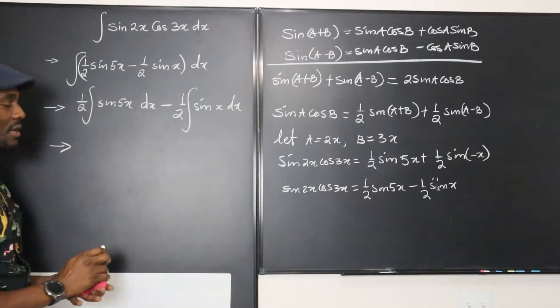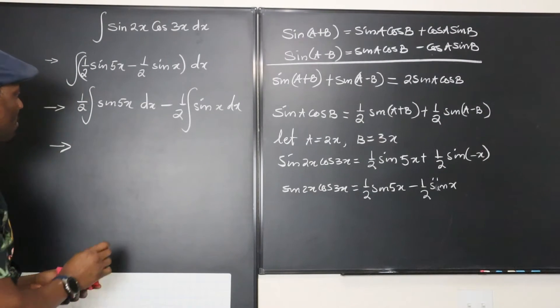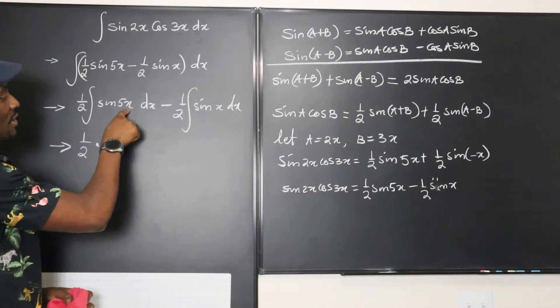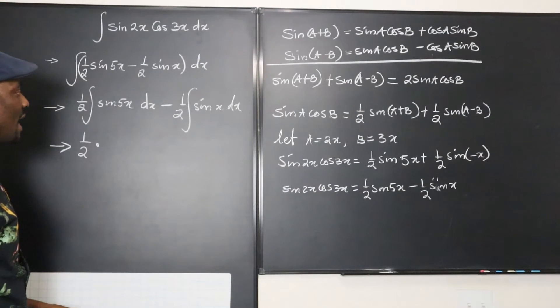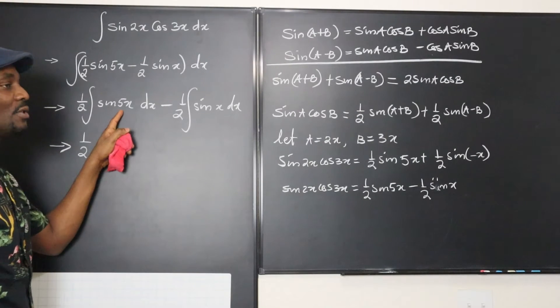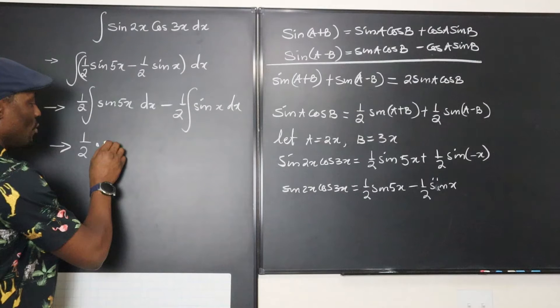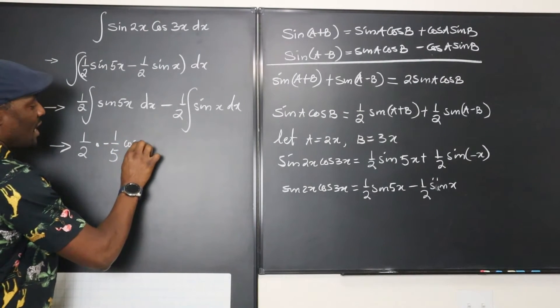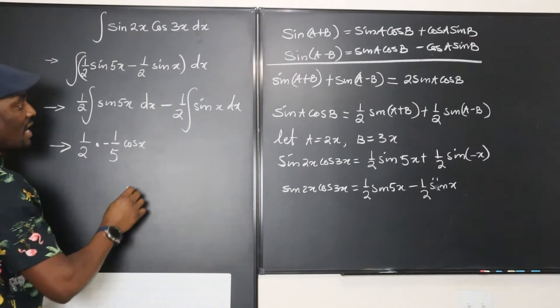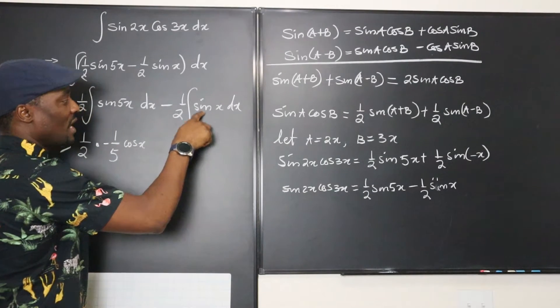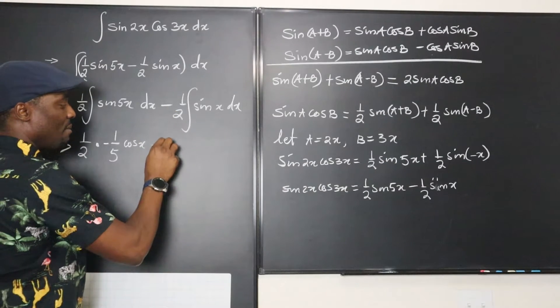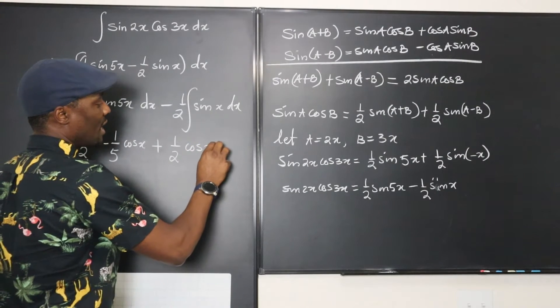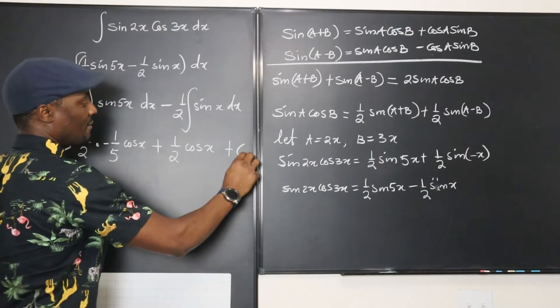So let's say the integral of this will be one half times, because when you integrate this, it's going to be negative cosine. Negative cosine, but you have to still divide by 5, so it will be negative 1 over 5 cosine 5x. And then when you integrate this, it's going to be a negative cosine times a negative, it's going to be a positive, and then you're going to have one half of cosine x plus c. Never forget the c.